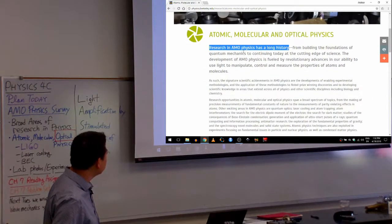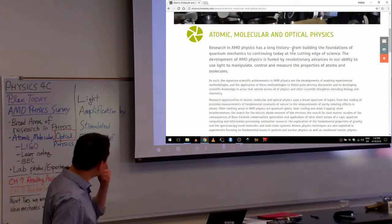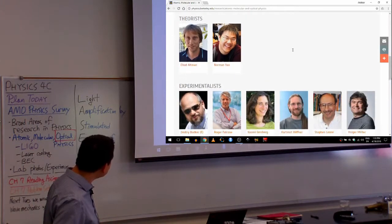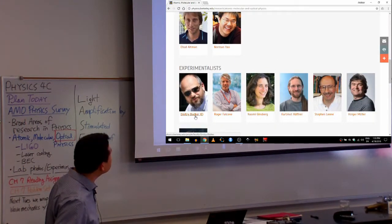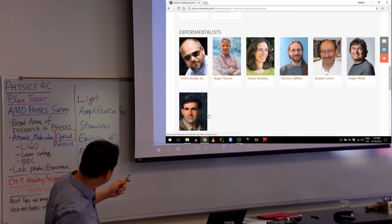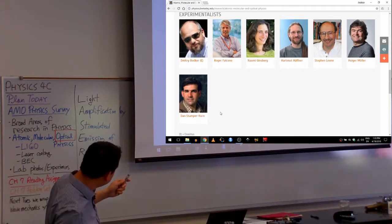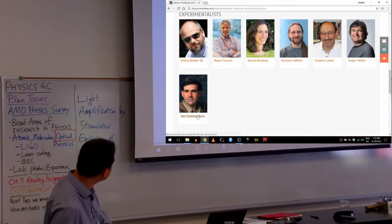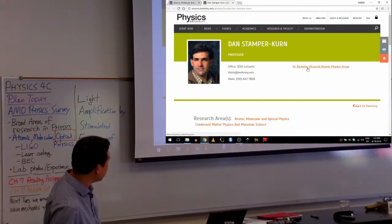In terms of people who are actually doing research in AMO physics, now that my advisor went elsewhere, the person who's been at Berkeley longest is Professor Stamper-Kern, and his research group is called Ultra Cold Atomic Physics Group for a reason.